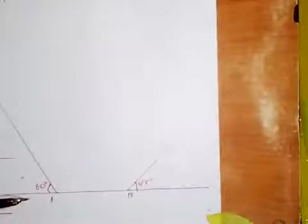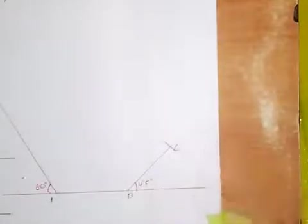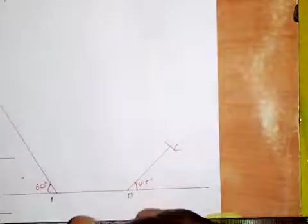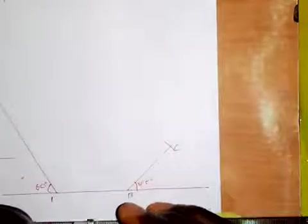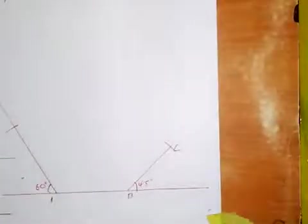On this line I will take a measurement of 45 millimeters. This gives us point C. Then I will take a measurement of 45 millimeters on the other line, giving us point E.